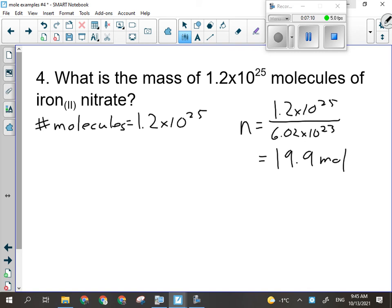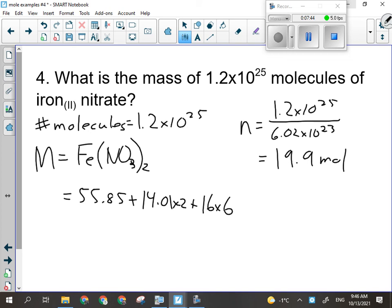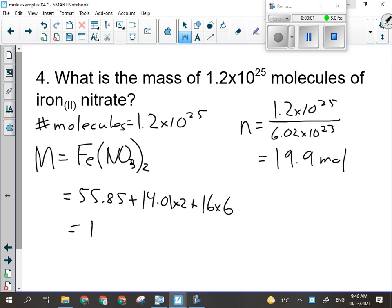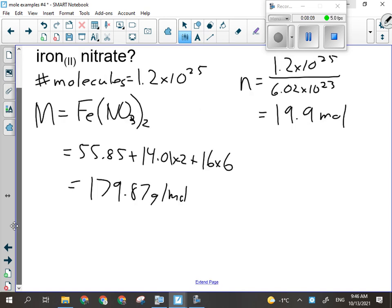All right, so I've got 19.9 moles. So now I have n, and the other thing the question told me was that this stuff is iron two nitrate. NO₃, that's a 3, 2. All right, so when I'm calculating the molar mass of this stuff, I've got iron, 55.85, only one of those, plus how many nitrogens? Two. And how many oxygens? Six. All right, so 55.85 plus 28.02, that's our nitrogens, plus 16 times 6, our oxygens. All right, so there's our molar mass, 179.87 grams per mole.